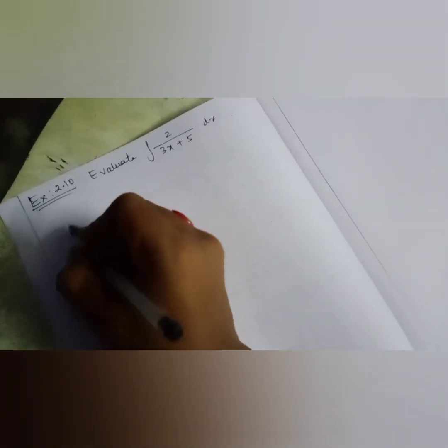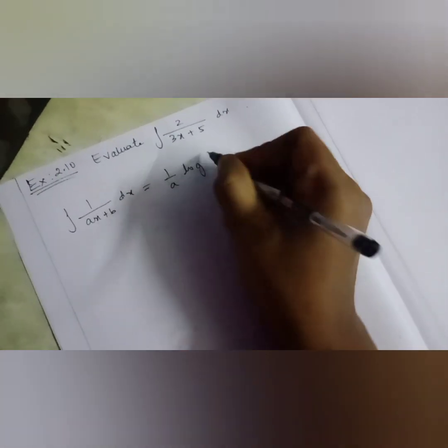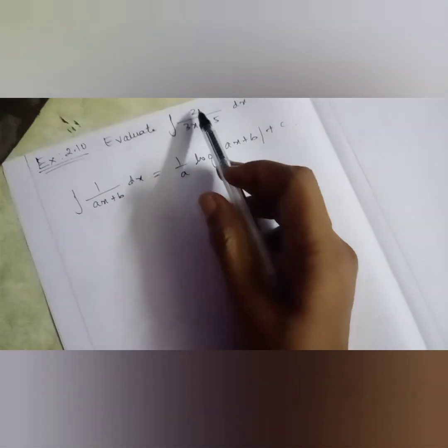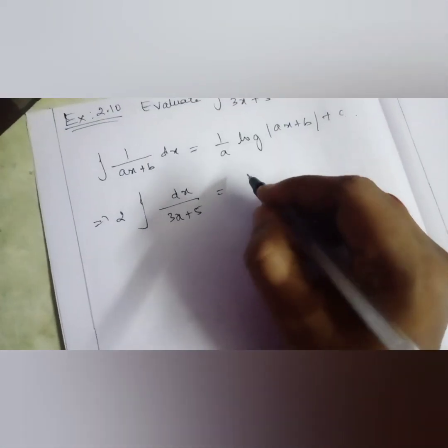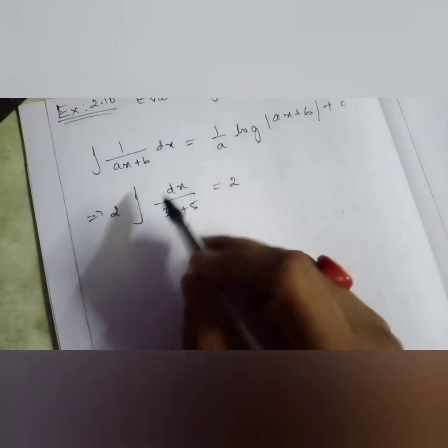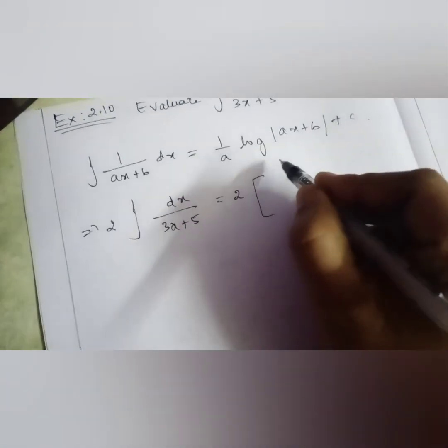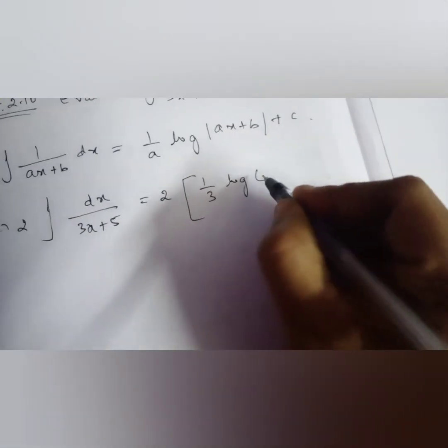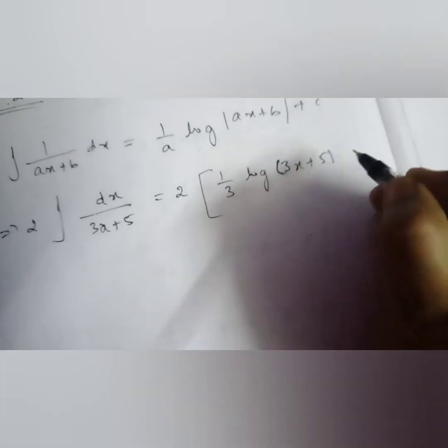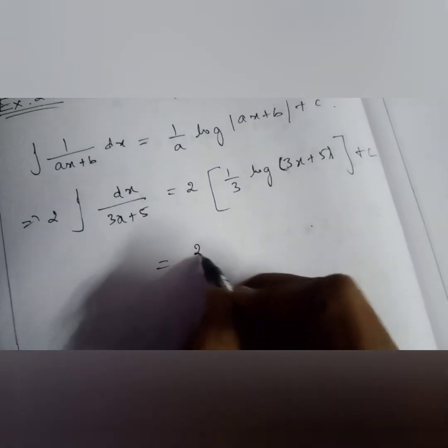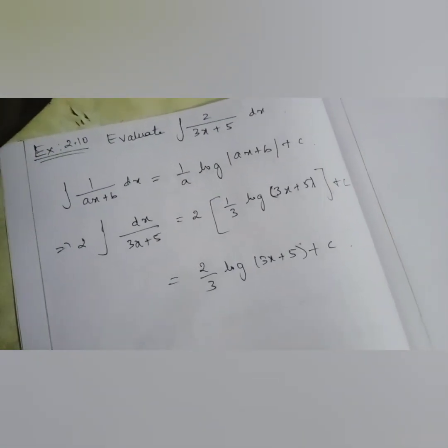Now we will see the Type 2 second formula: ∫1/(ax+b) dx = (1/a) log|ax+b| + c. For example, ∫2/(3x+5) dx — since 2 is a constant, take it outside: 2∫dx/(3x+5). Here a = 3, so this equals 2 × (1/3) log|3x+5| + c = (2/3) log|3x+5| + c. This is how we integrate using the Type 2 second method.